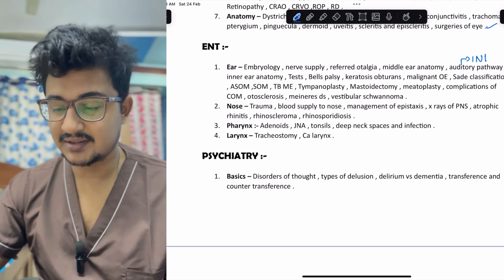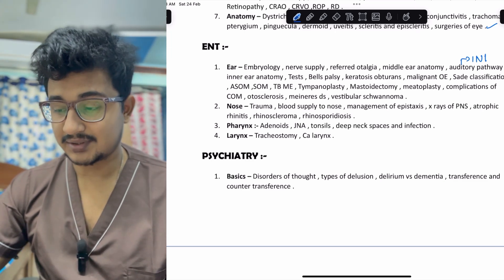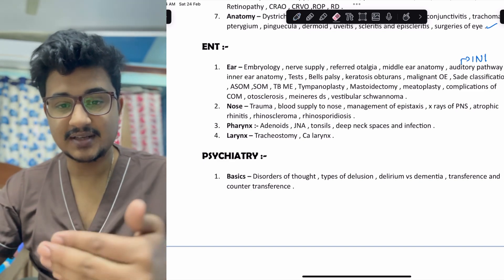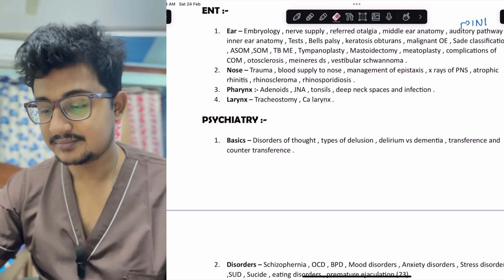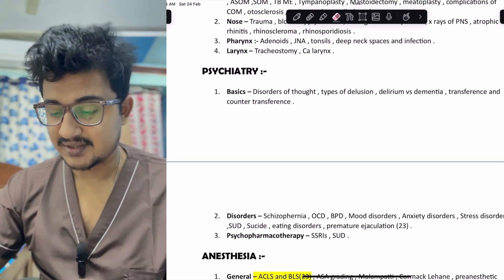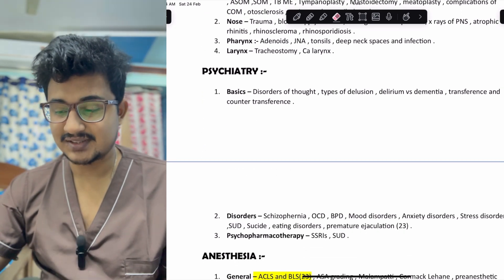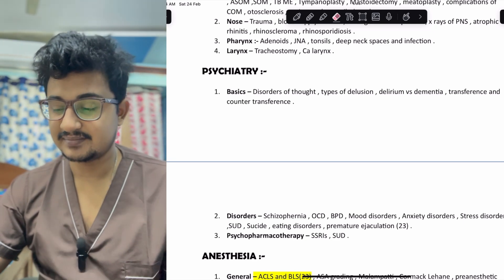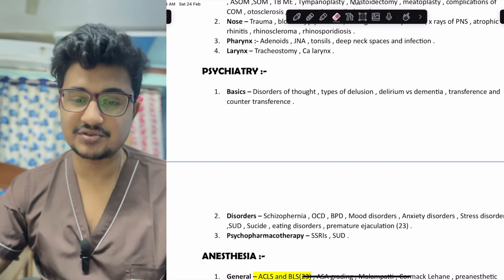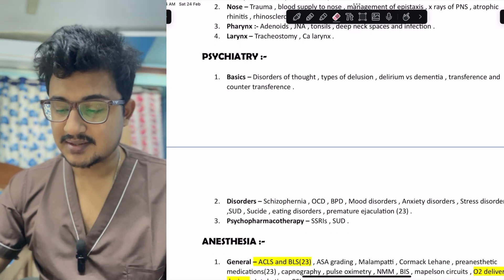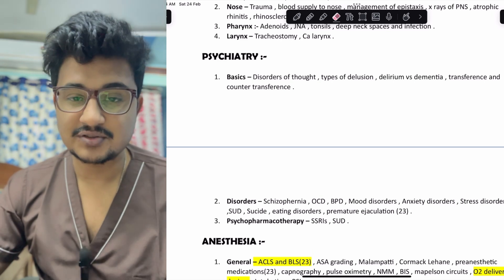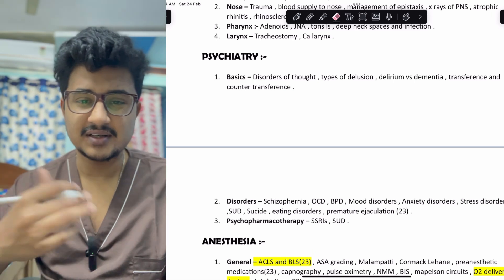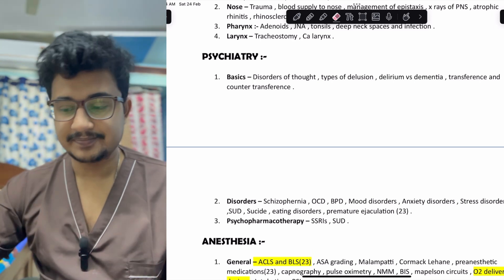Now coming to psychiatry. In the basics: disorders of thought, types of delusion, delirium versus dementia, transference and counter-transference — the basics of psychiatry are also asked. Under disorders: schizophrenia, mood disorders, anxiety disorders, substance use disorders, eating disorders, and sexual disorders are important — premature ejaculation was asked. In psychopharmacotherapy, SSRIs and substance use disorder management in de-addiction are important — covered in pharmacology as well, so you can combine and check.